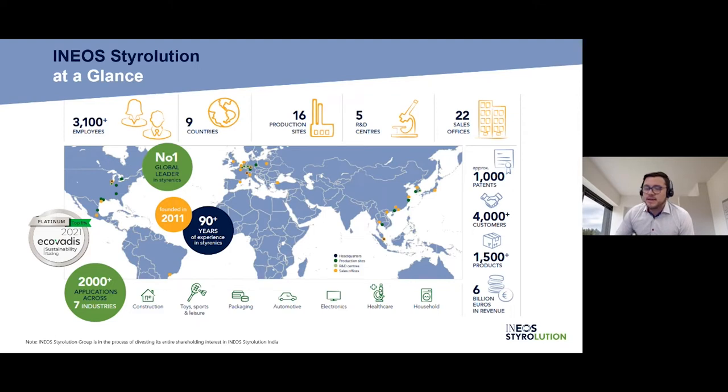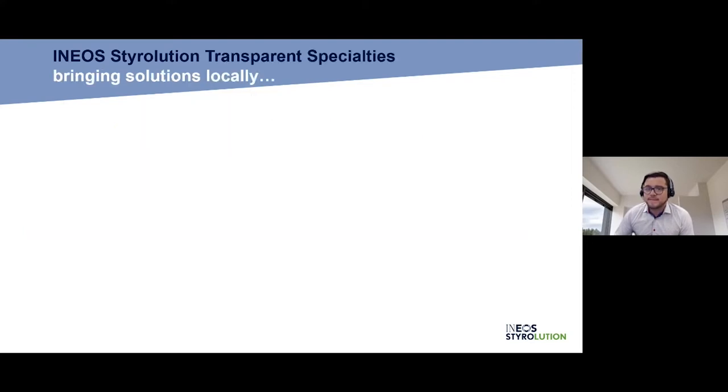We have 16 production sites located in the three major continents which we provide solutions locally to all of our customers. At the bottom of the picture, you can see the seven markets that INEOS Styrolution has identified as strategic. That includes automotive, electronics, household, construction, packaging, healthcare, toys, among others.